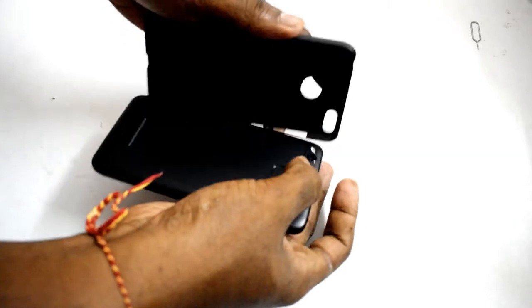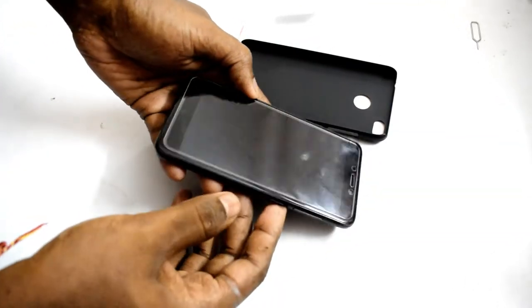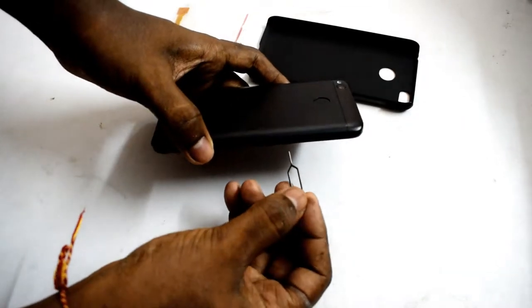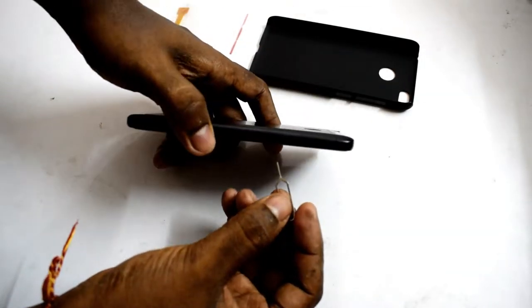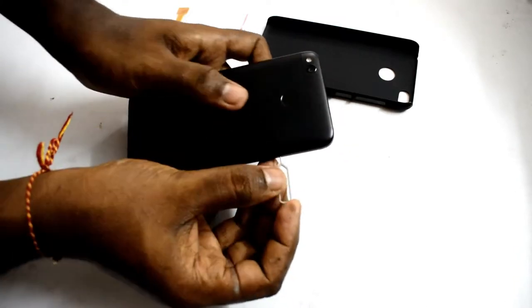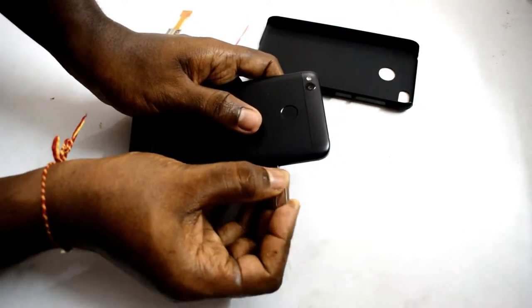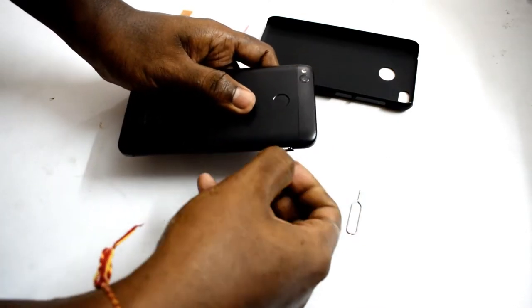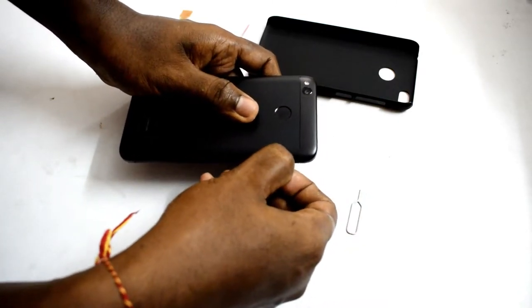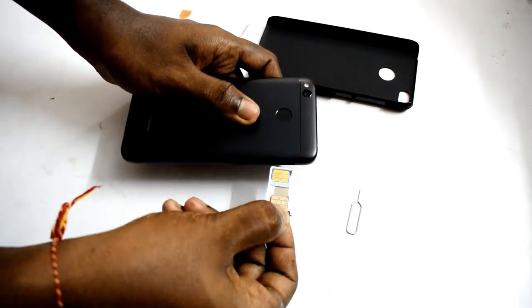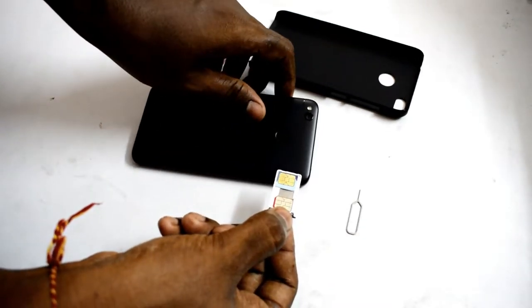So first let me remove my back cover. Here I have removed the back cover and this is my Redmi 4 set. Now I am going to take out the SIM slot with this SIM slot opener key. Gently take out the hybrid SIM slot, pull it outwards. And here you can see I had been using two SIMs together without any SD card.